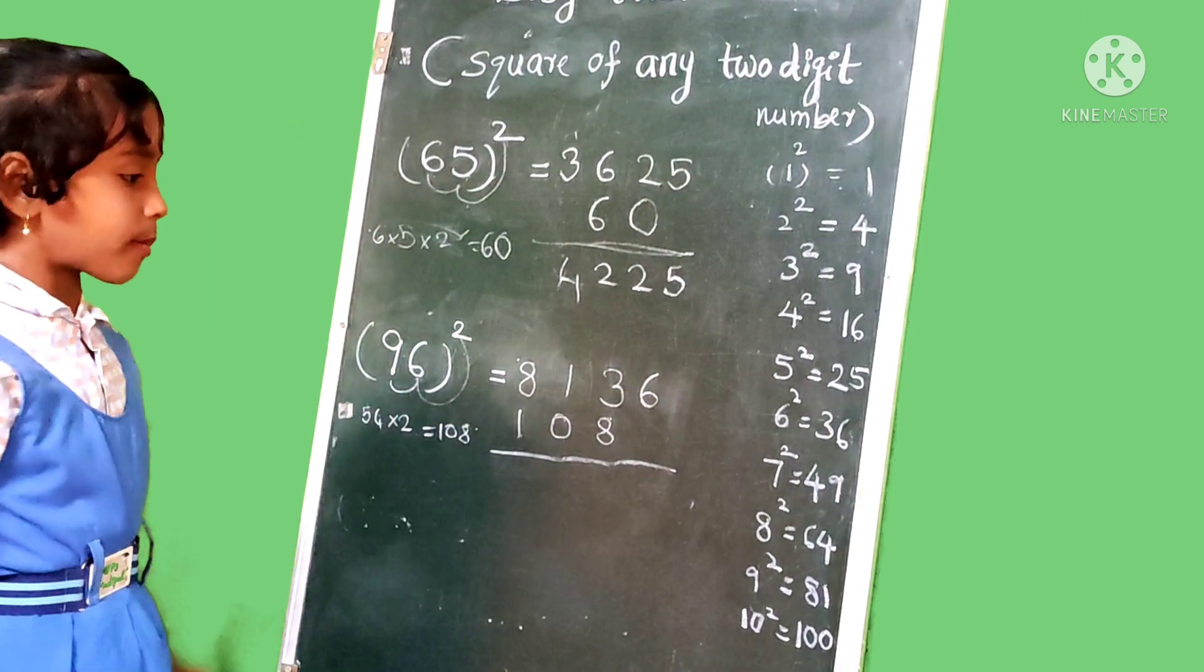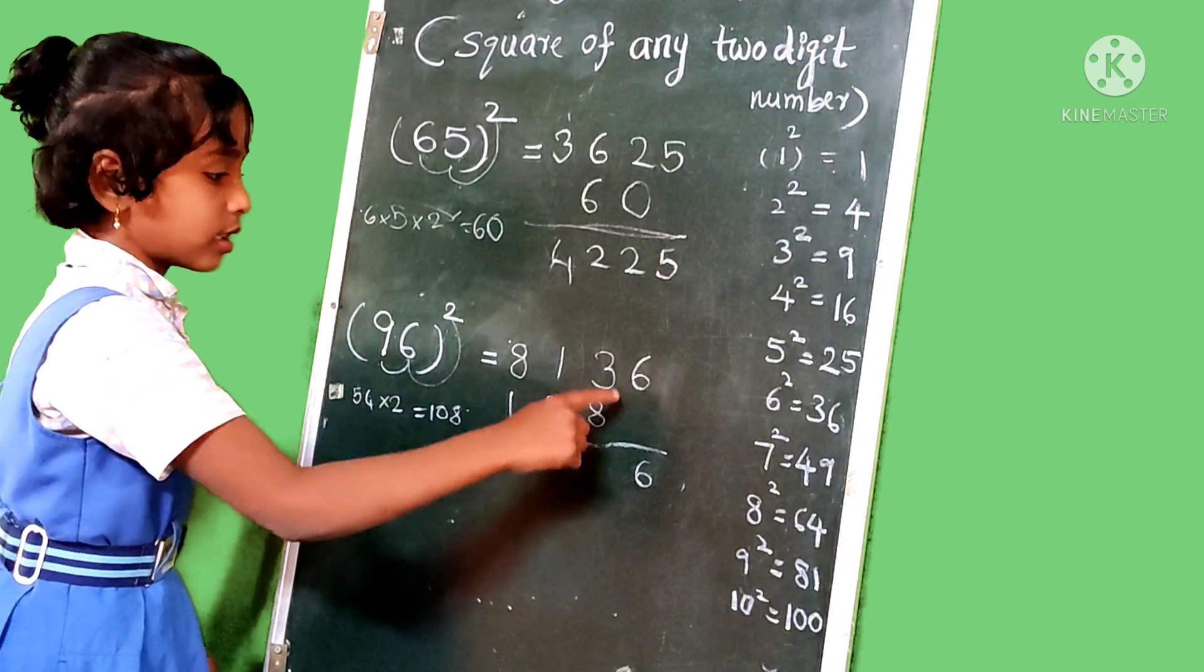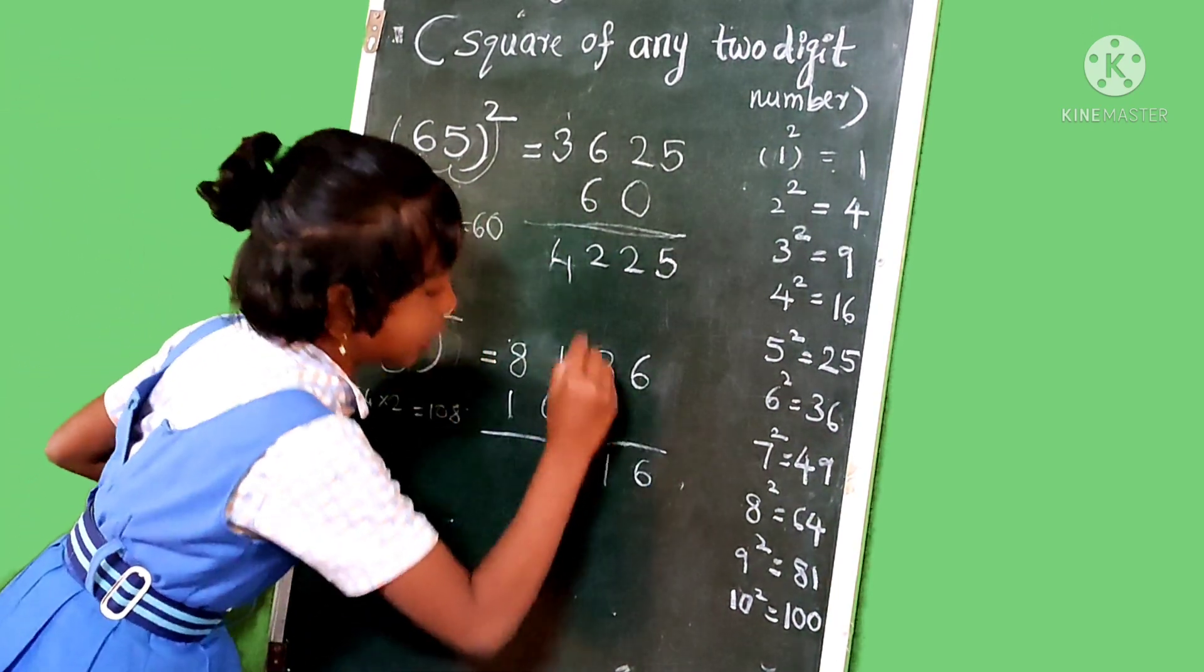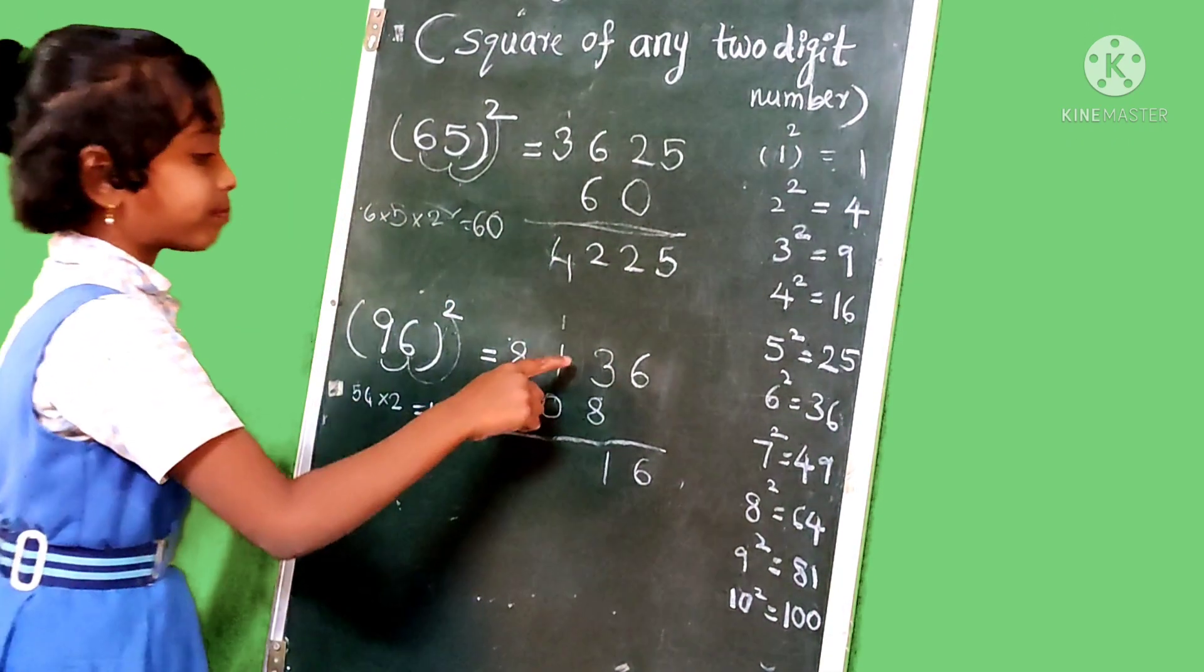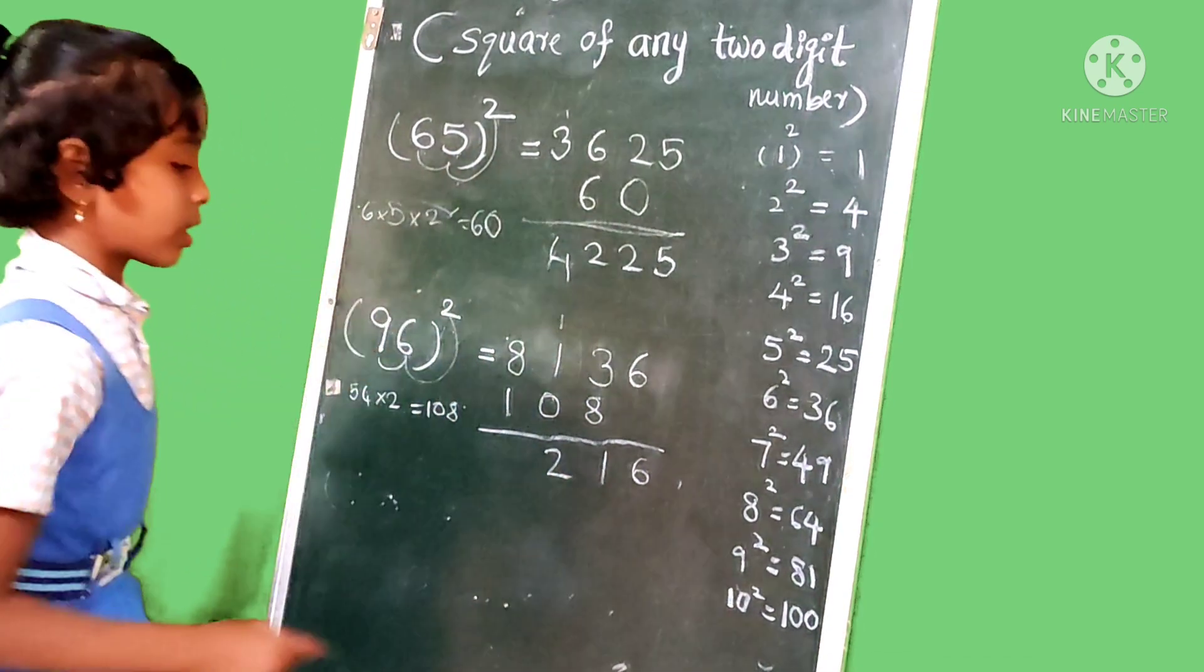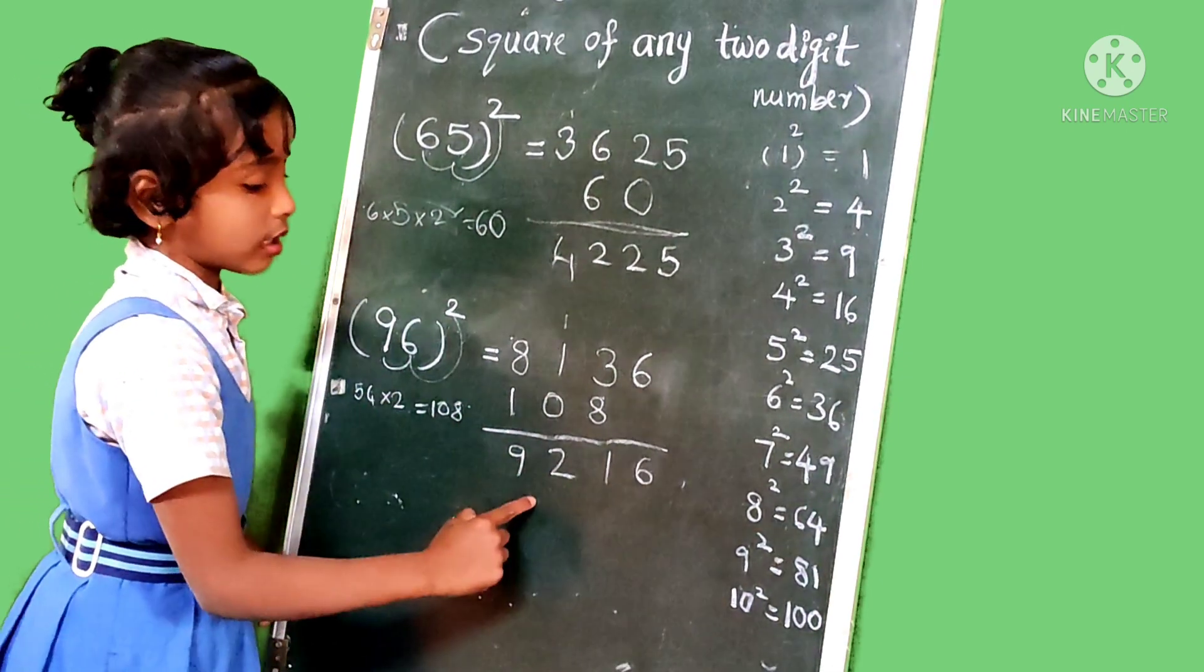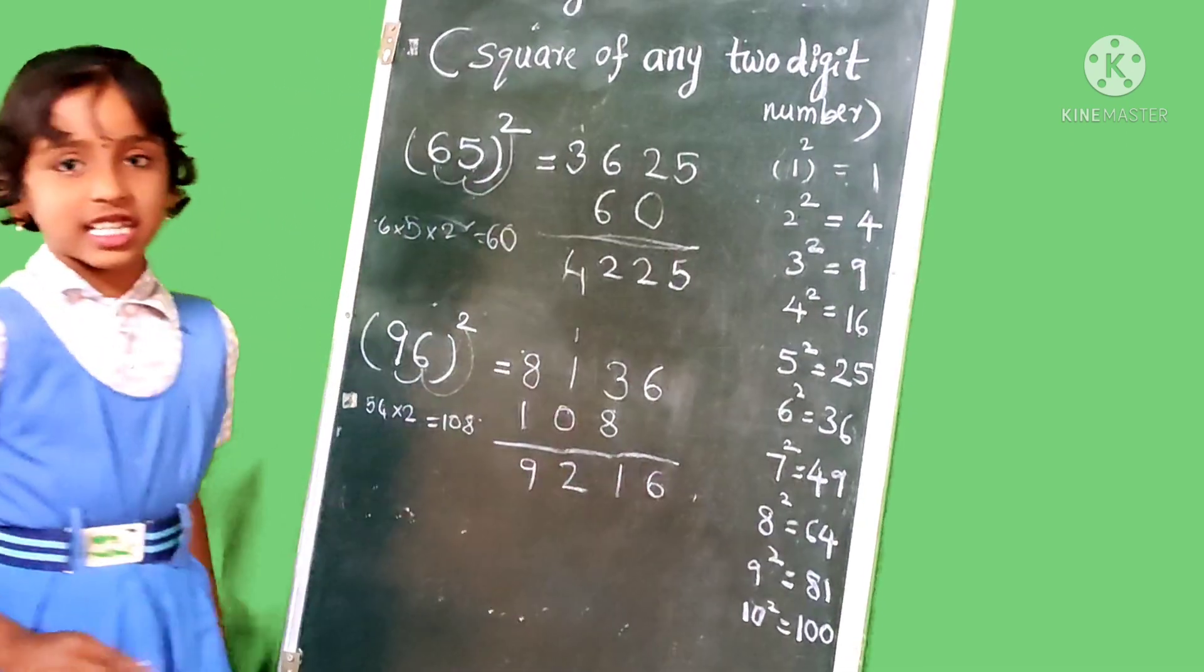So we add these numbers. 6, we write 6 as it is. We write 6 as it is. And 3 plus 8 is 11, and 1 carry over. 1 plus 1 is 2. 2 plus 0 is 2. Then we write plus 1 is 9. 96 squared is 9216.